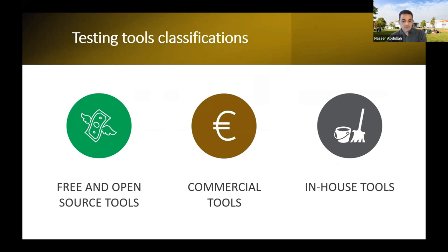And some tools are called in-house tools, meaning the company develops those tools and then uses them only internally. Some companies take a free tool, enhance it or add some features, and then use that as their company tool. So here the three classifications are based on cost: free/open source, commercial, and in-house.